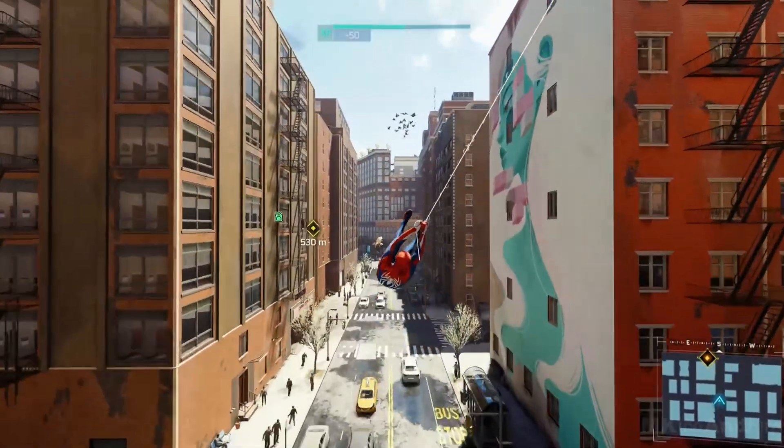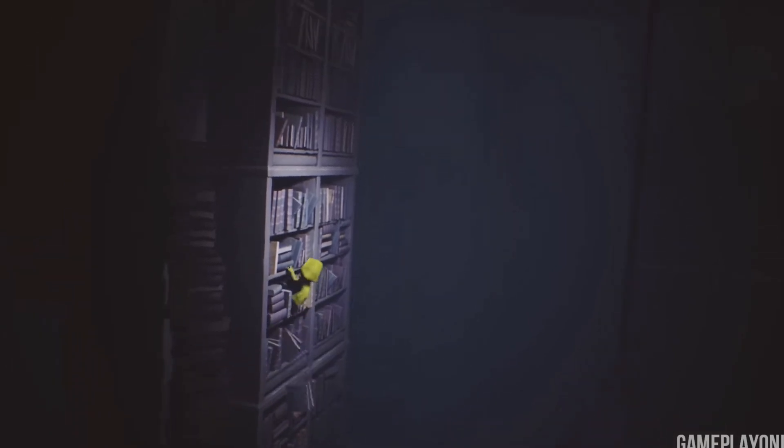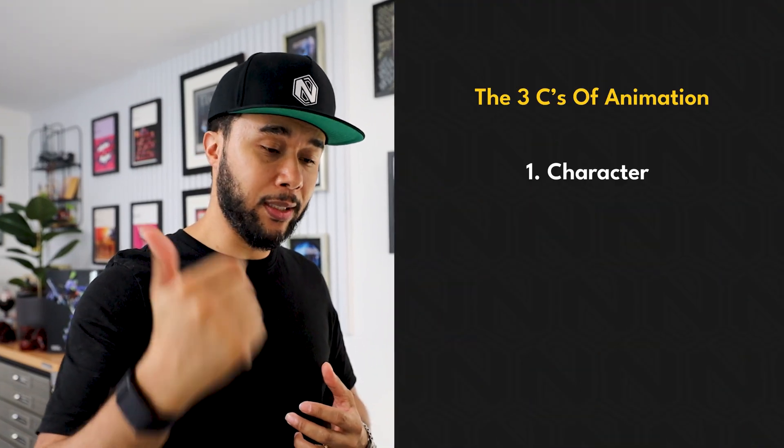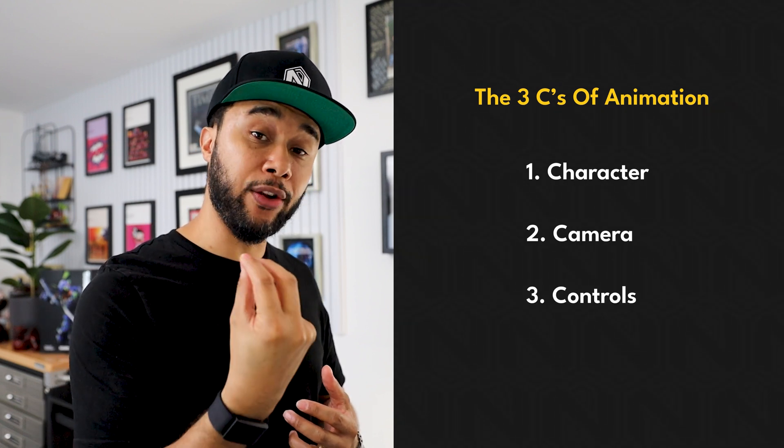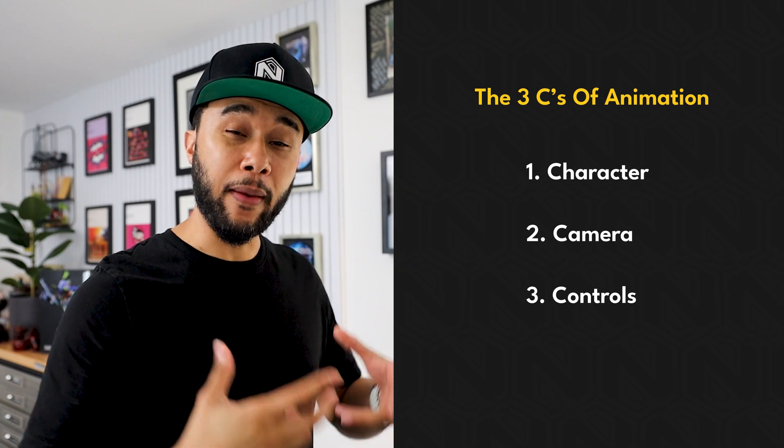The Three C's is something that AAA developers talk about, work on, and basically obsess about during game development. To me, it's the biggest differentiator between an AAA-looking game and an indie-looking game, because in AAA we spend so much time looking at character, camera, and controls — and these three things need to work together in a symbiotic way to give the player the best experience.